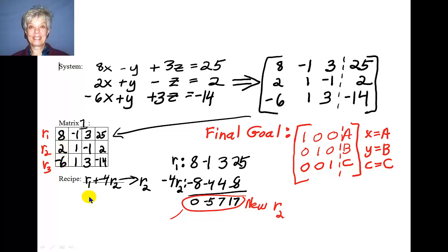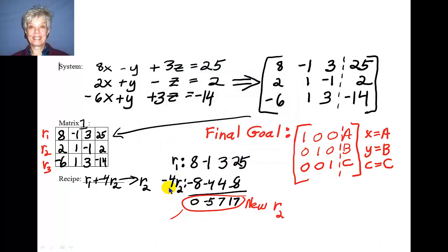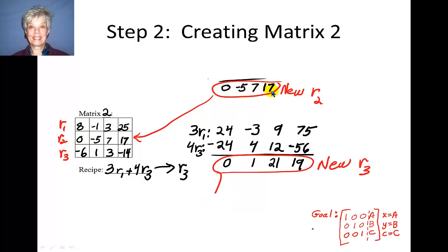Alright, here's how I do it. And I am going to use this recipe step. I'm going to add row 1 and negative 4 times row 2, and put the result in row 2, so that I'll have a new row 2. So row 1 is 8, negative 1, 3, 25. And row 2 is negative 4 times each of the numbers in row 2, so that I get negative 8, negative 4, 4, and negative 8. And when I add the 2 rows together, I get 0, negative 5, 7, and 17. And this is going to be my new row 2. That's right. I can actually substitute the result of adding 2 rows into a row. So here I go. Here is 0, negative 5, 7, and 17, the new row 2.